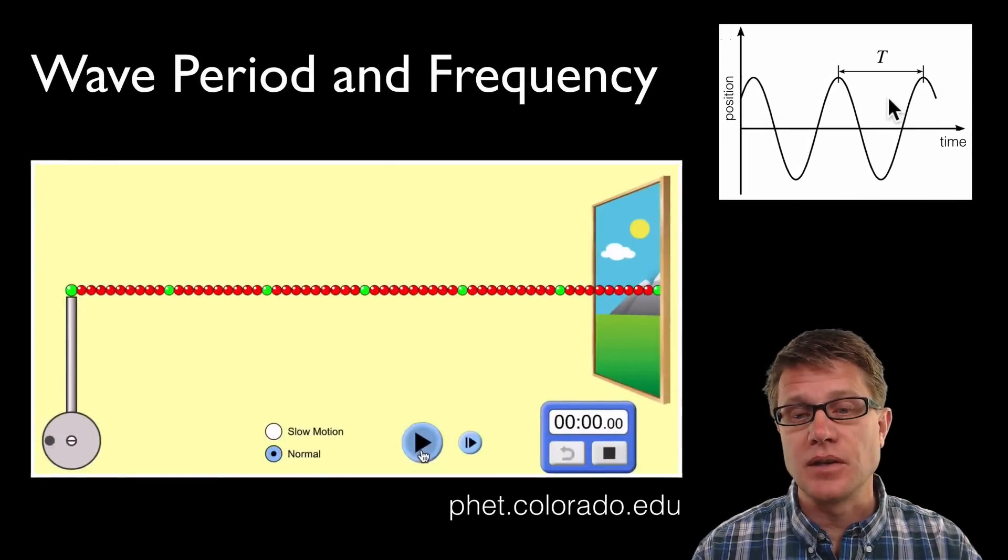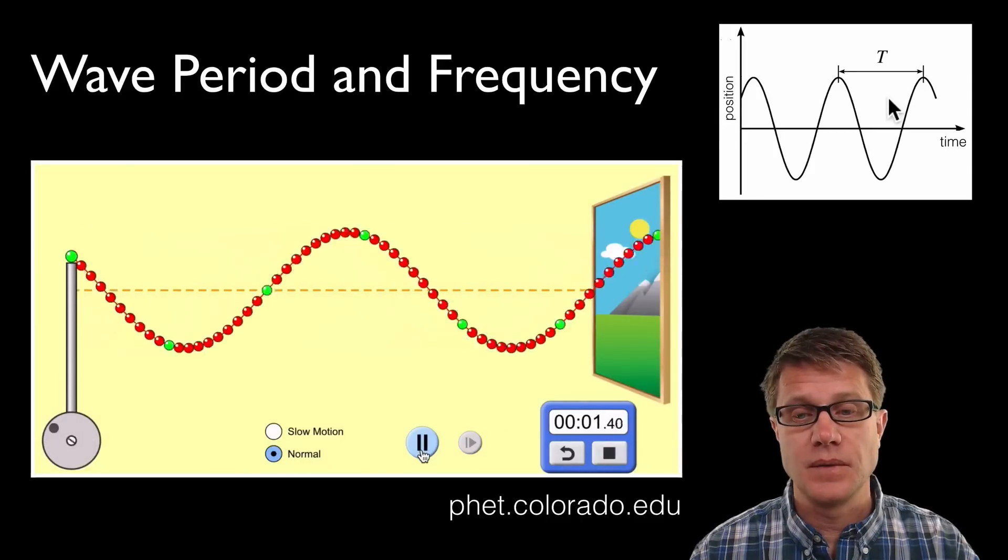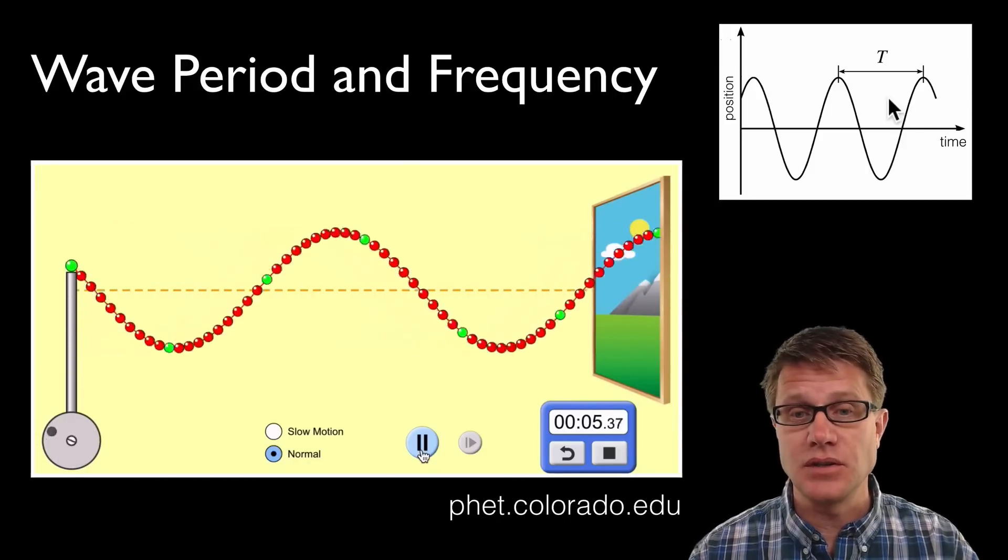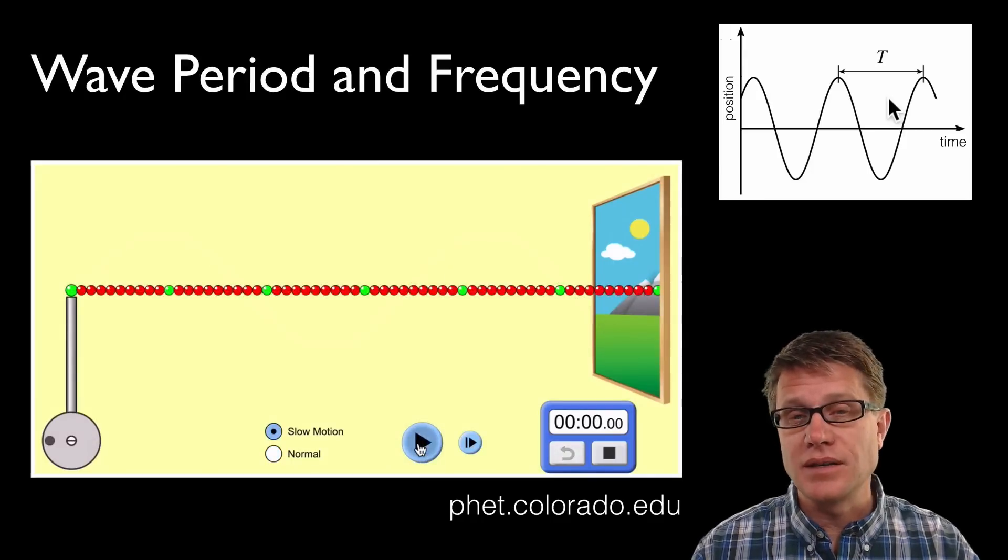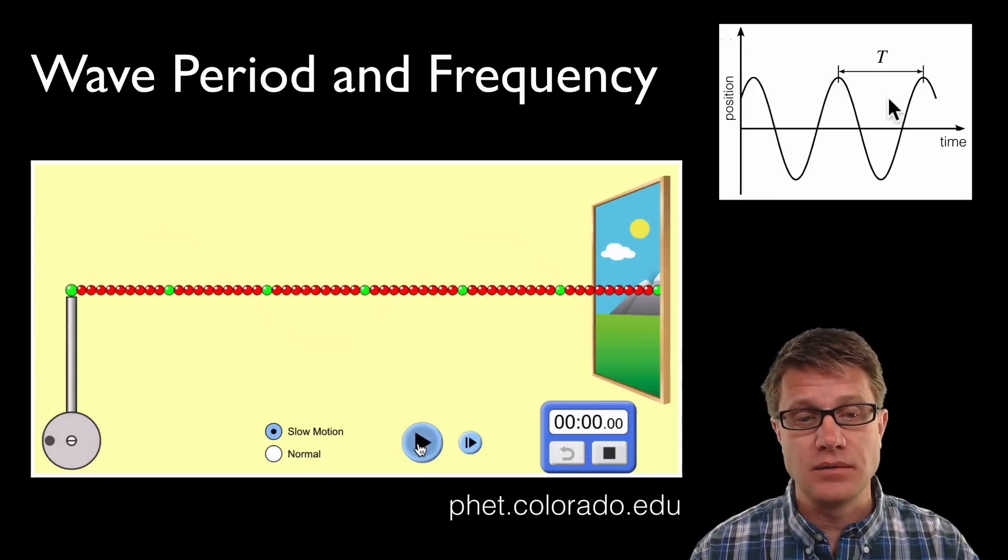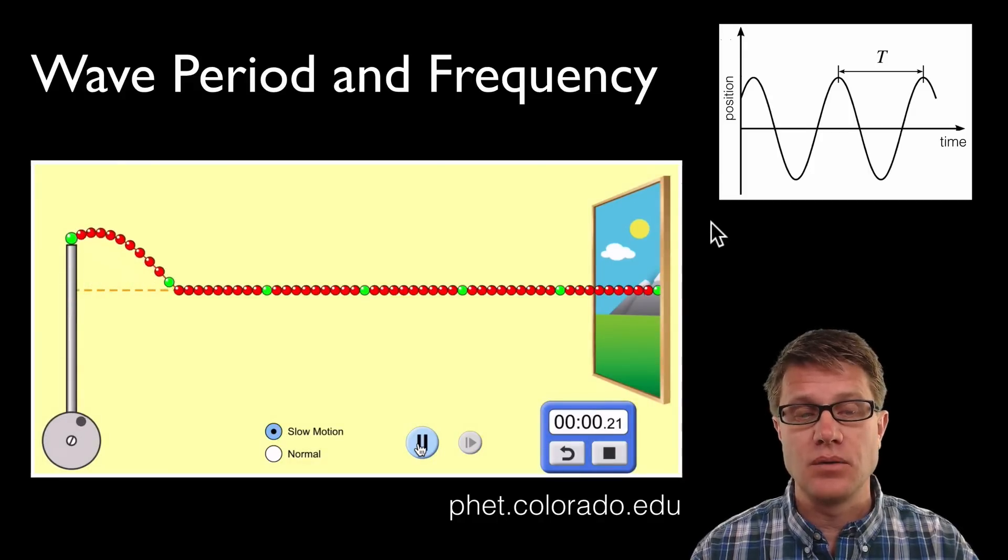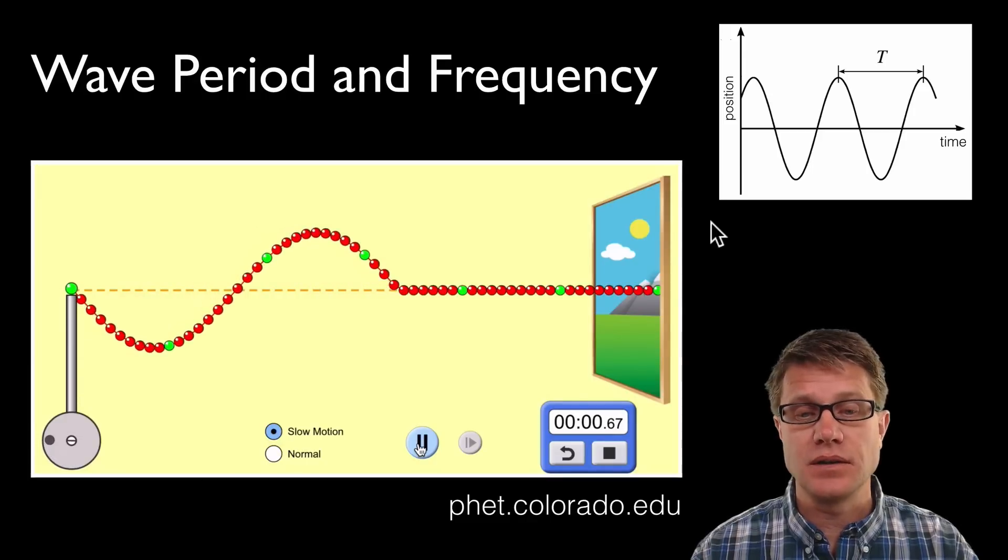Let's do a little simulation. This is a PHET simulation. What I'm going to do is generate some waves. Those waves are moving from left to right, and this is going to show us the position. It's going to have a certain frequency and therefore a certain period. A way to see that is to slow it down. Since we're looking at a position of the wave over here, I've also added a clock so we can keep track of that time. We're going to create one wave, and I'm going to stop it after we go through one oscillation.